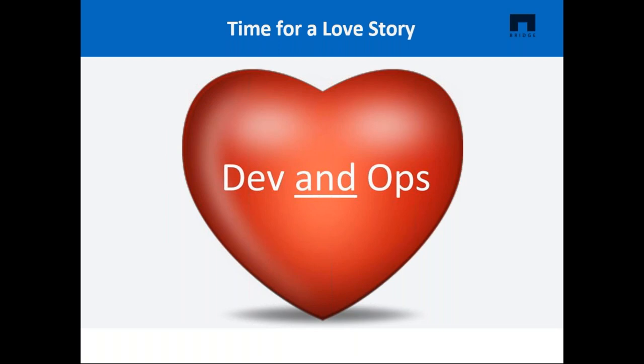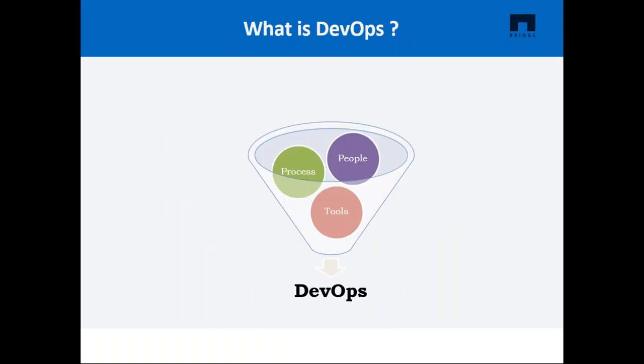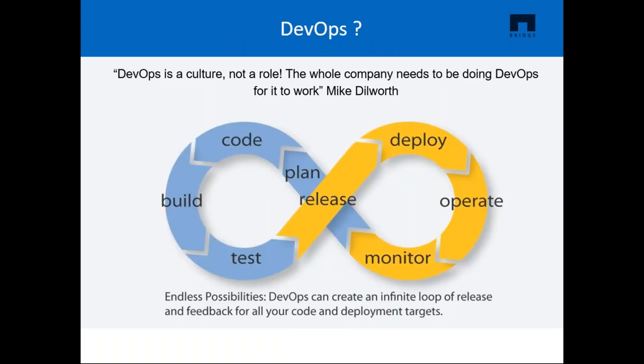What does this mean to the IT world? Dev and Ops — development teams and operations teams — are not different silos. They have to work with each other, share responsibilities, and work together for the success and happiness of the entire project and team. It's all about a combination of process, people, and tools — not just any one of these things alone.